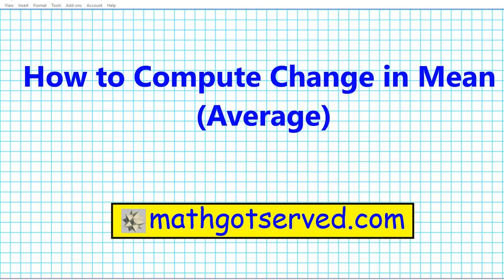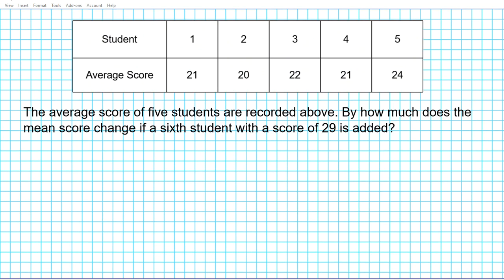Good day students, welcome to MathGotServed.com. In this clip we're going to be going over how to compute the change in mean or average. Let's consider the following problem: the average score of five students is recorded above. The question is: by how much does the mean score change if a sixth student with a score of 29 is added?